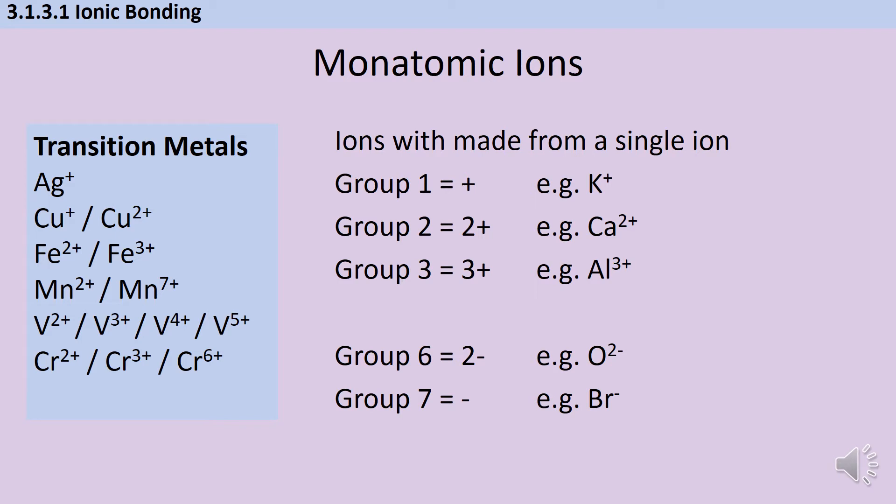At A-level you're expected to be absolutely fluent with the charges on different ions. Often they'll ask about calcium hydroxide and expect you to know that because calcium is in group 2, it forms a 2+ ion. This is worth making flashcards for. Everything in group 1 makes ions with single positive charge, group 2 makes 2+ ions, group 3 makes 3+ ions, group 6 makes 2- ions, and group 7 makes single minus ions.